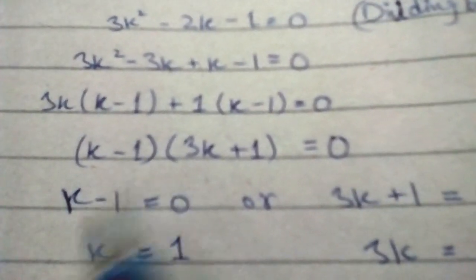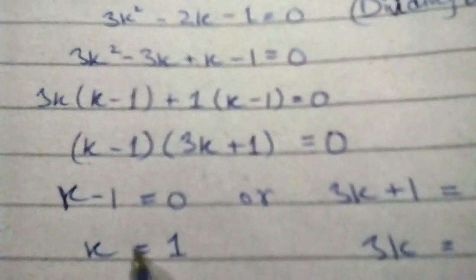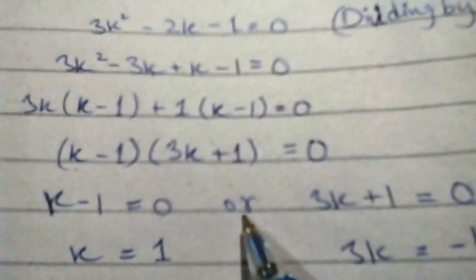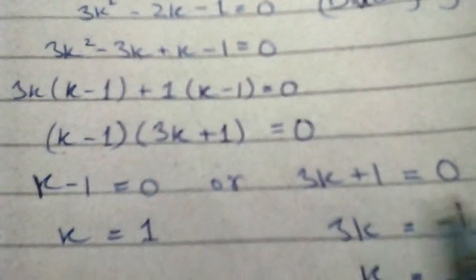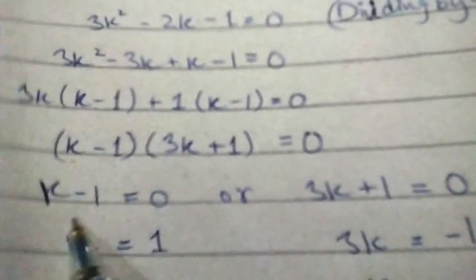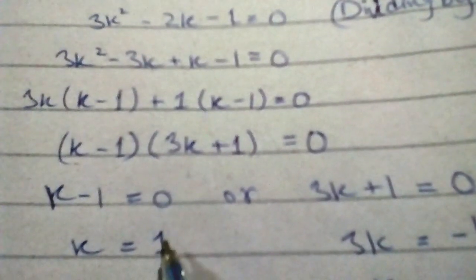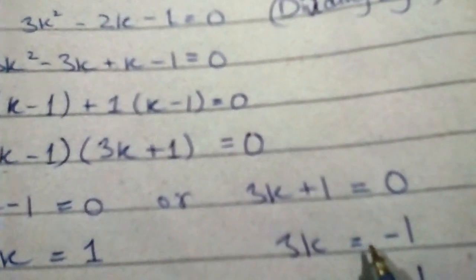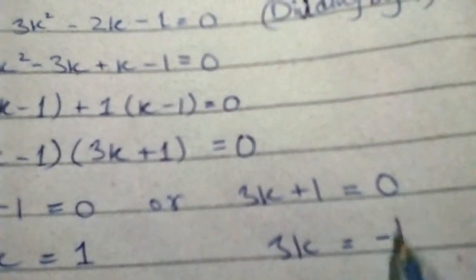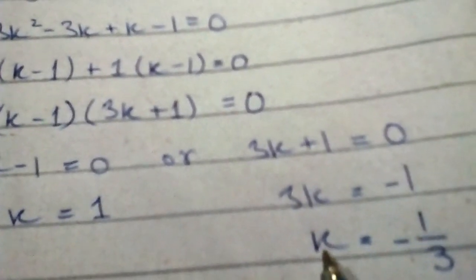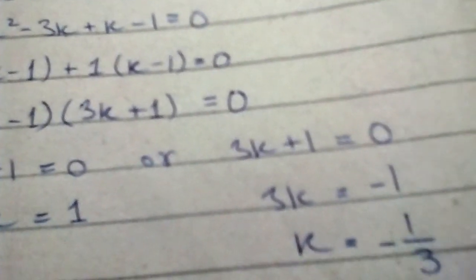bracket کھولنے پر: (k - 1)(3k + 1) = 0۔ اس لئے k - 1 = 0 جس سے k = 1، اور 3k + 1 = 0 جس سے 3k = -1، یعنی k = -1/3۔